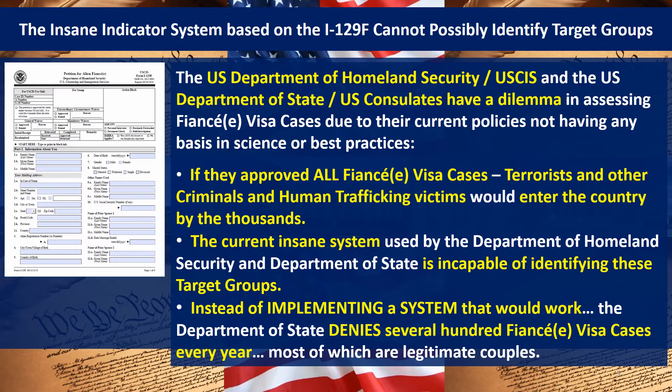Here's their dilemma: if they approve all fiancée visa cases, terrorists and other criminals and human trafficking victims would enter the country by the thousands. Nobody wants that — not US citizen petitioners and their fiancées, not DHS/USCIS, not the Department of State consulates, and not ICE, which would have a lot more cleanup work to do.